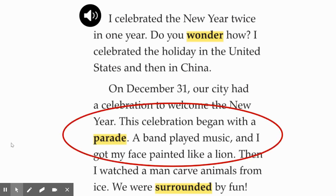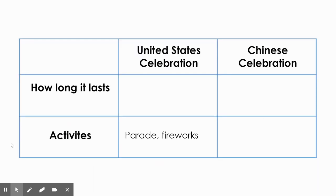Yes, she described a parade, a band playing music, and she got her face painted. So I'm going to record some of that information in the box on our graphic organizer. Activities — you can say parade, and I also included fireworks because we saw them in the picture at the beginning of the book. So go ahead and take time to write down some of the activities that happen on New Year's in the United States. Once you have written your response on your graphic organizer, you can press play.